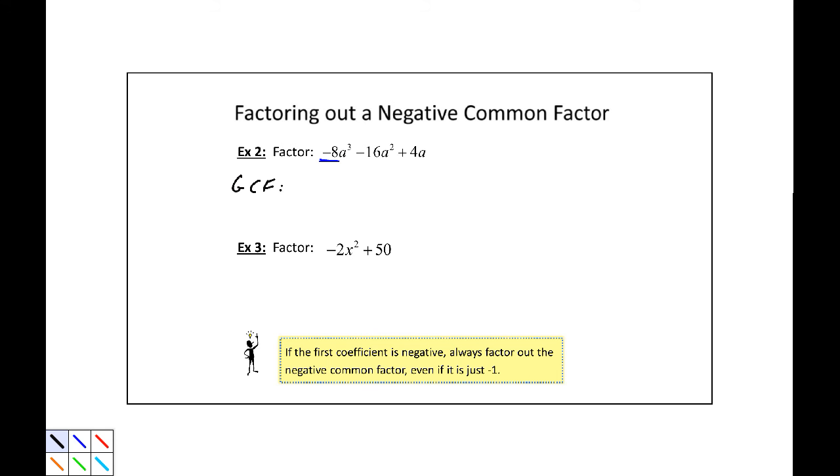So GCF equals negative, and let's see, I have 8, 16, and 4. 4 is the largest number that goes into all three of those, so 4 and a, because that's the smallest exponent we have on a. So this would be negative 4a, and we're going to divide each of these by negative 4a, which results in 2a squared plus 4a minus 1. So negative 4a, parentheses, 2a squared plus 4a minus 1, close parentheses. That's our factored form.